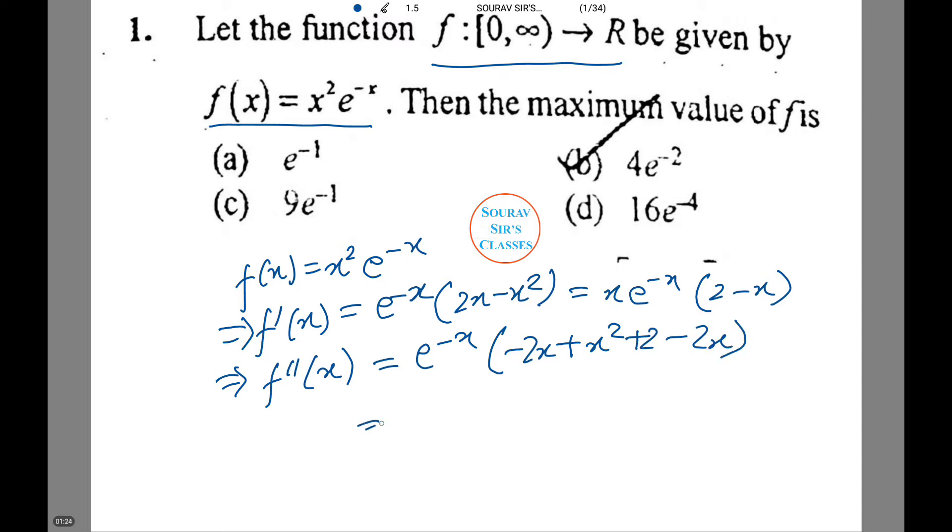This equals e to power minus x times x square minus 4x plus 2. Now equating f dash x equals to 0, we have x equals 0 comma 2.